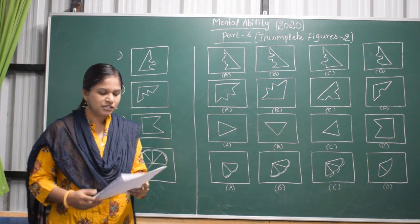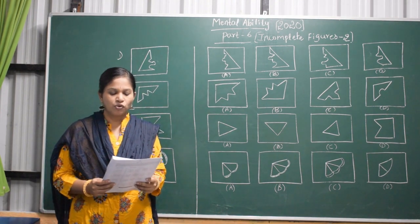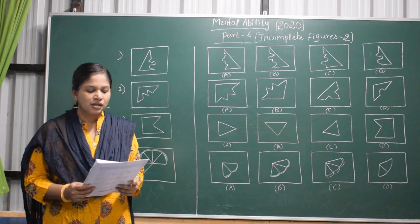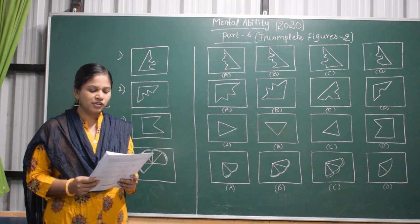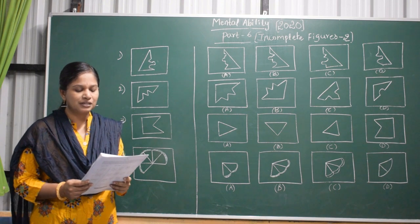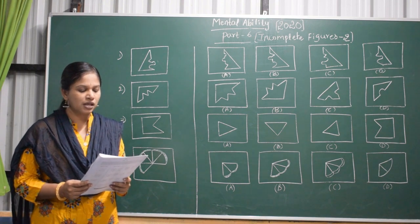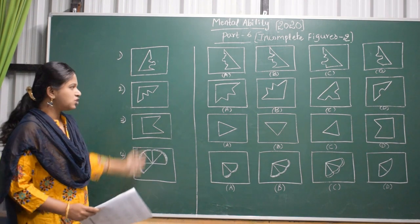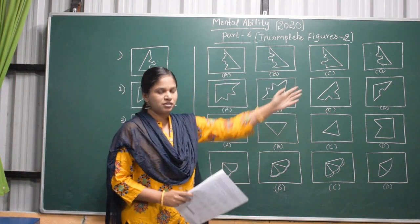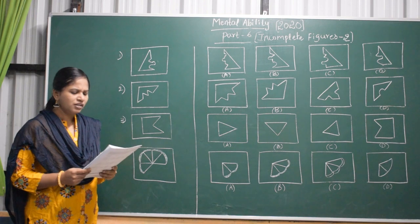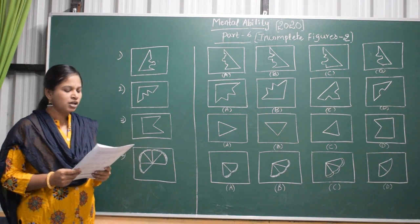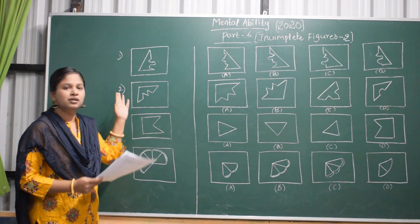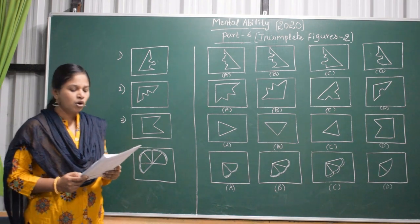I will read the question first. In questions 1 to 4, one part of a geometrical figure—triangle, square, or circle—is on the left side as a question figure, and the other one is among the four answer figures A, B, C, and D on the right side. These are the question figures. These four are answer figures. Find the figure on the right side that completes the geometrical figure and darken the circle in the OMR sheet.